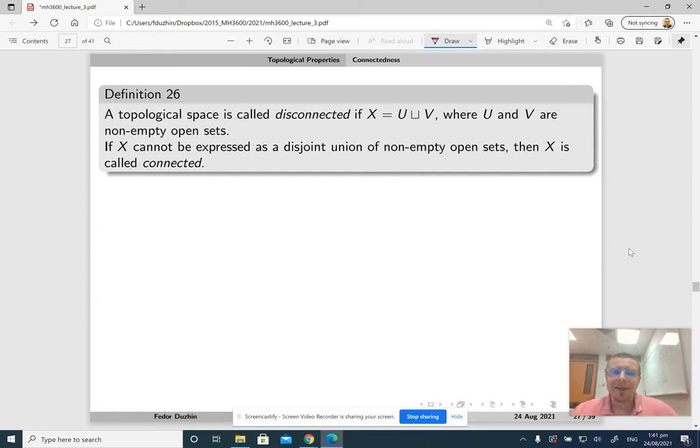In that case, the topological space is called disconnected. If there is a set that is open and closed at the same time, that is not X or empty. If it is not true, if X cannot be expressed in such a manner, then X is called connected.